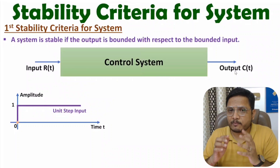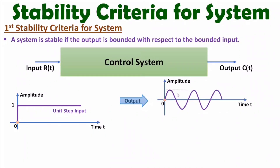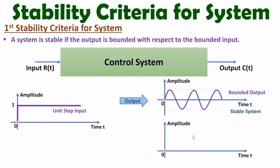Let me show it by some waveforms. If the output is sinusoidal, you can observe that this is a bounded output — bounded means the output cannot exceed the upper limit or go below the lower limit, so the given system is stable. Now let us consider a ramp output. If the output is a ramp, there is no upper limit, meaning it is unbounded output. If the output is unbounded, one can say the system is unstable.